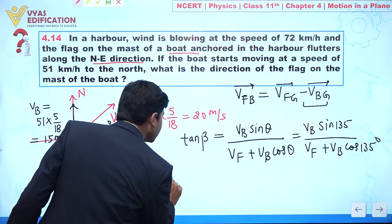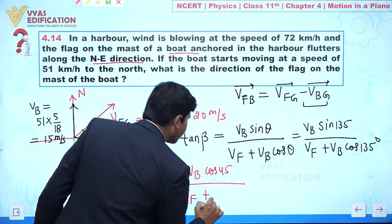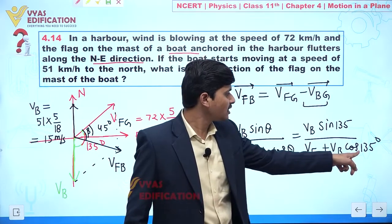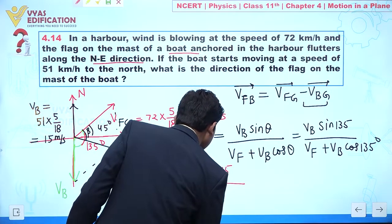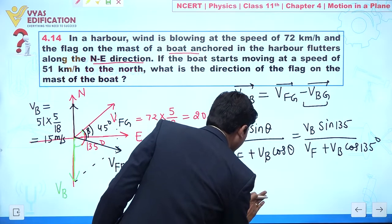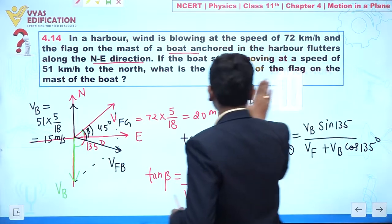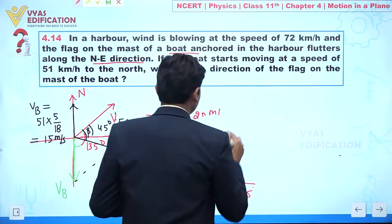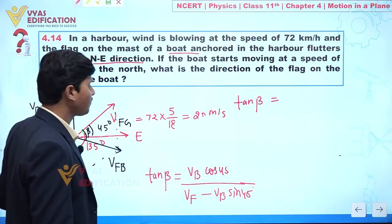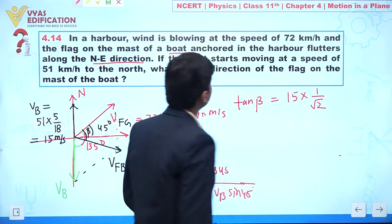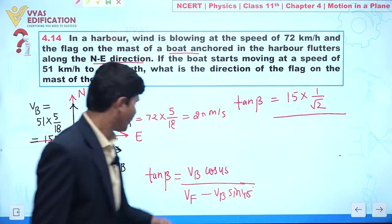The value of tan β is given by V_b times cos 45° divided by (V_f + V_b times cos 135°). Since cos 135° equals cos(90° + 45°) which equals minus sin 45°, we can write this as: tan β = V_b × (1/√2) divided by (V_f − V_b × (1/√2)). With V_b = 15 m/s and V_f = 20 m/s, this becomes 15/√2 divided by (20 − 15/√2).